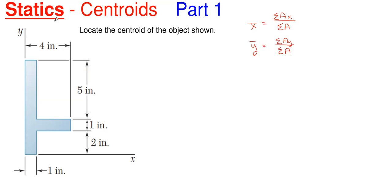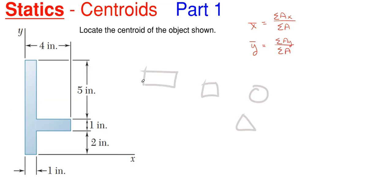Whenever you have an object that is not just a simple rectangle, square, circle, or triangle — when it is not just a singular shape like that — it is called a composite shape. A composite shape is just one or two or more of those shapes put together. For example, we have a vertical rectangle with a horizontal rectangle attached together.